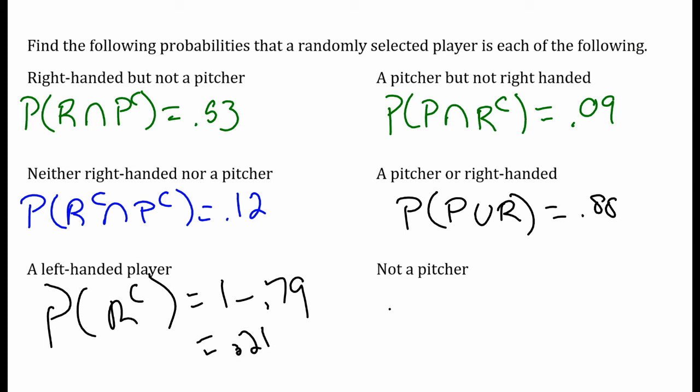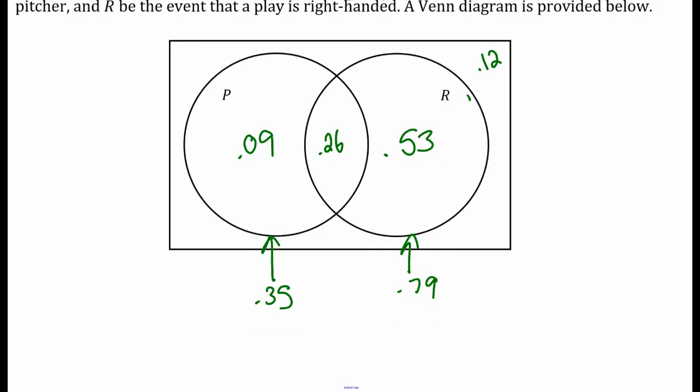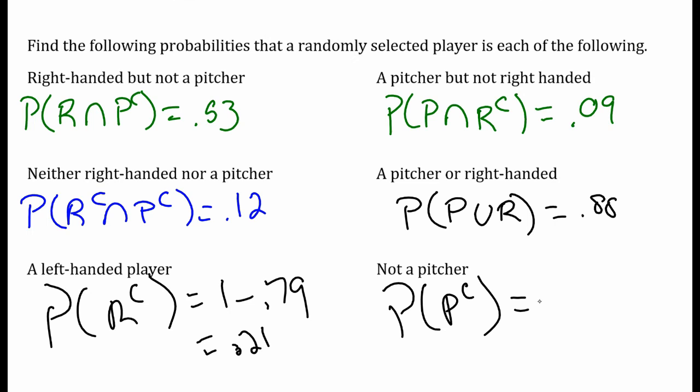What's the probability that they're not a pitcher? So the probability of the pitcher complement, the complement of pitcher. Well, 35% of them, 0.35, fit in the P circle, so what's not P? 0.65.